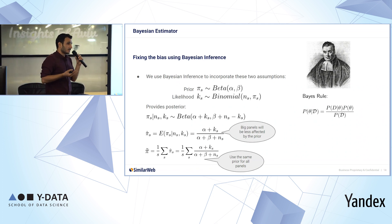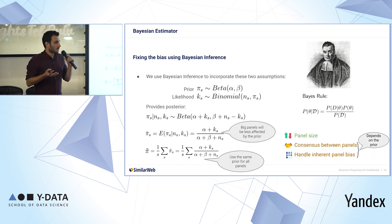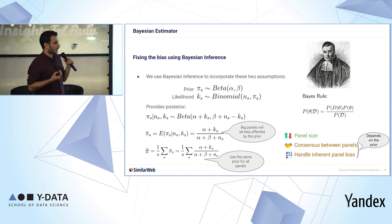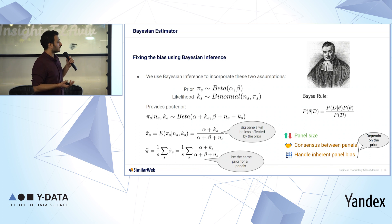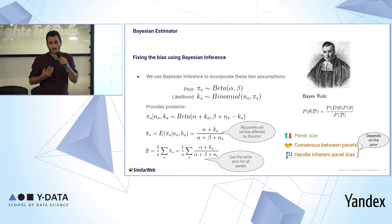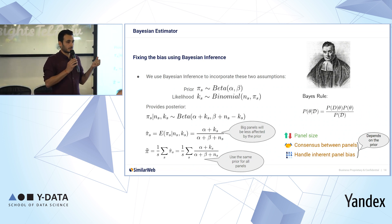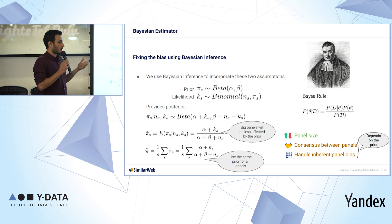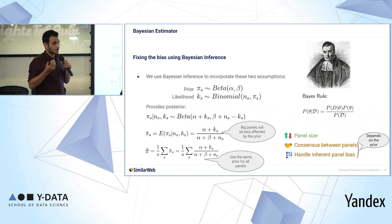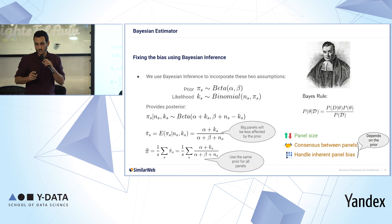To come up with pi tilde, we average across the three panels. Regarding our criteria, we do account for panel size and consensus between panels. For handling inherent panel bias, it depends on how we choose our prior — if the prior accounts for inherent bias that's good, but it's not easy to come up with such a prior.